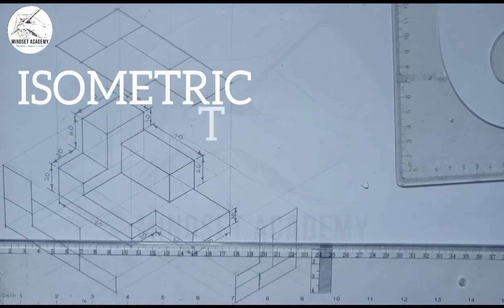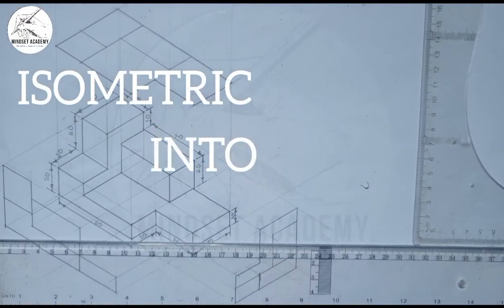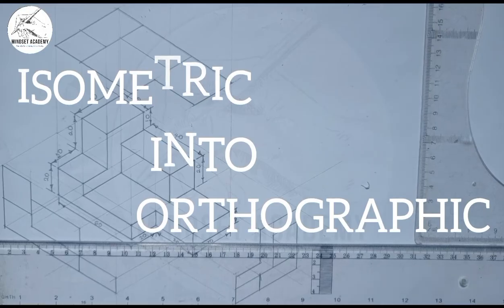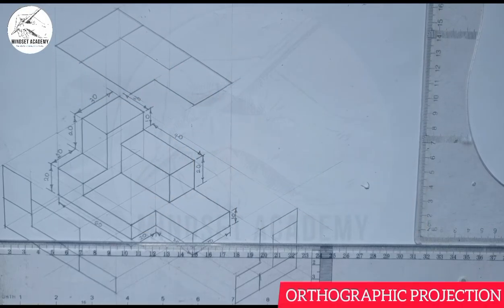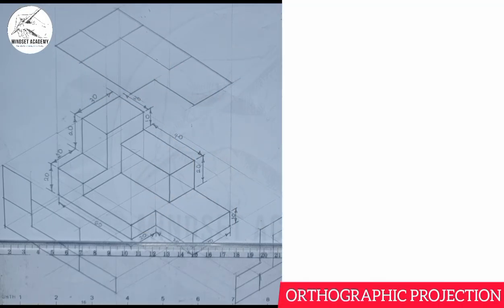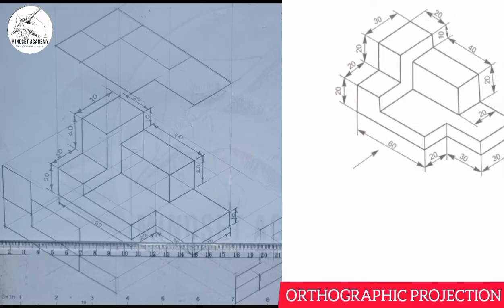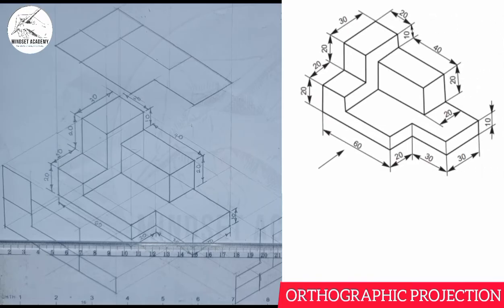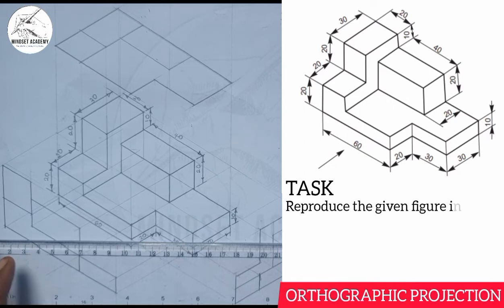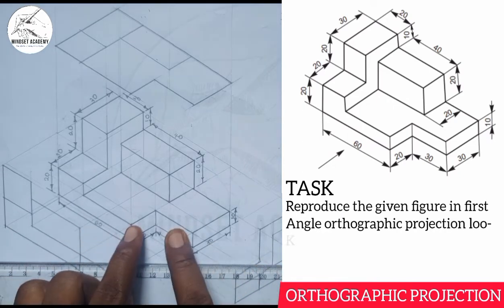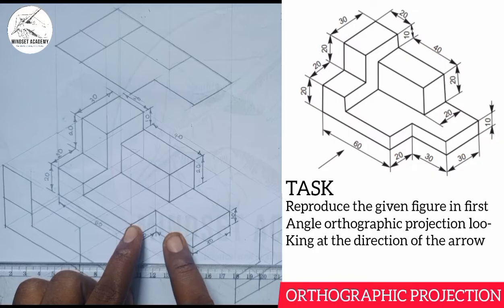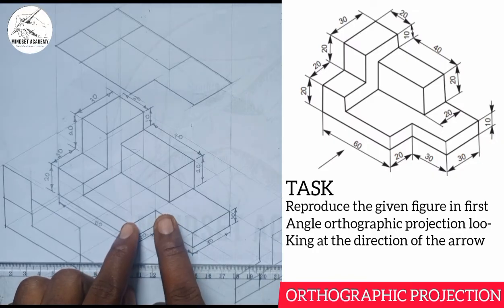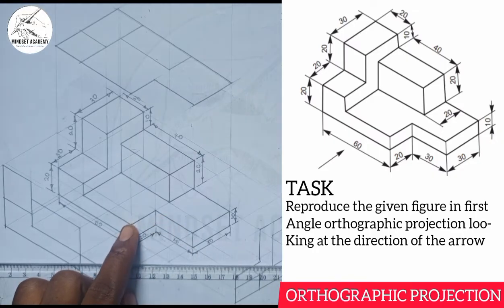Welcome to my channel Mindset Academy where we want to reproduce the figure displayed at the right-hand side of the screen in orthographic projection. For clearer explanation, I have reproduced the figure in isometric on my drawing sheet, focusing on this diagram which is the same as the diagram at the right-hand side of the screen in orthographic projection.